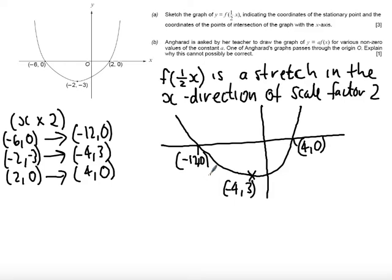Part B says, Angharad is asked by her teacher to draw the graph of y equals af(x) for various non-zero values of the constant a. One of Angharad's graphs passes through the origin. Explain why this cannot possibly be correct.